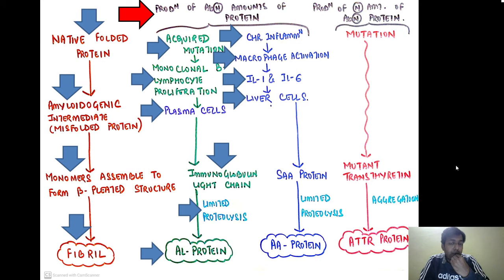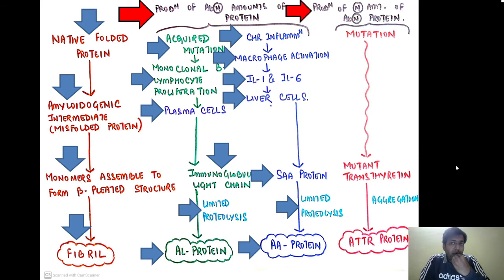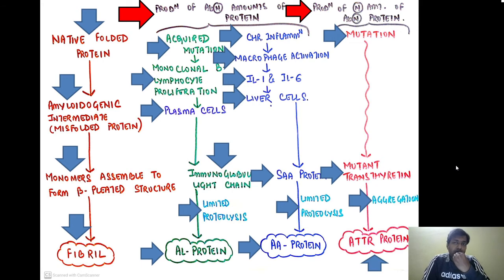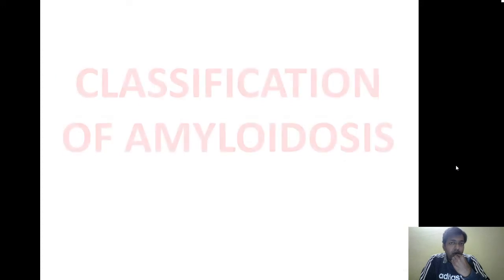SAA protein, through limited proteolysis, deposits as AA protein fibrils. So abnormal amounts of normal protein can cause AL or AA amyloidosis. In the second pathway — normal amounts of abnormal protein — a mutation hinders protein folding, producing mutant transthyretin that aggregates and gives rise to ATTR amyloidosis.